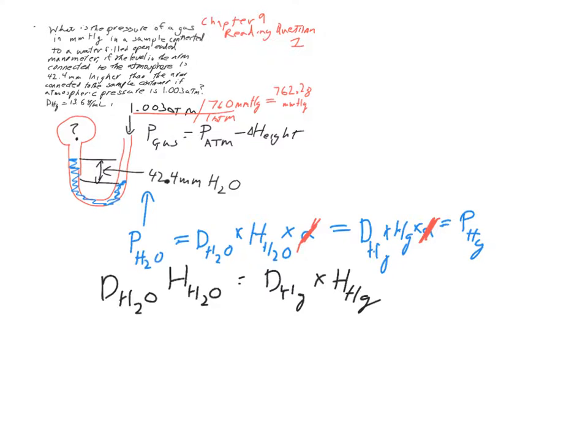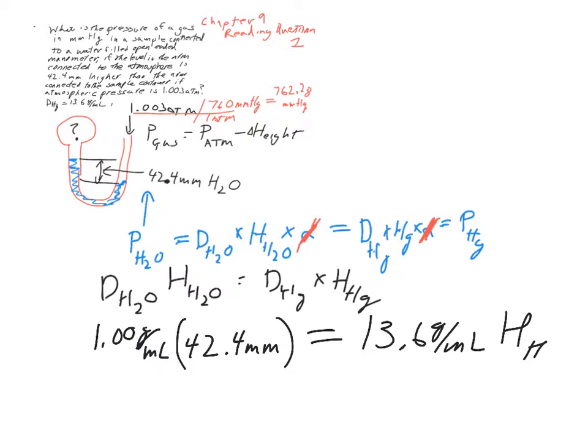The density of water is one gram per milliliter. The height of our water in this problem is 42.4 millimeters. The density of mercury is 13.6 grams per milliliter. Now we just have to solve for the height of mercury.